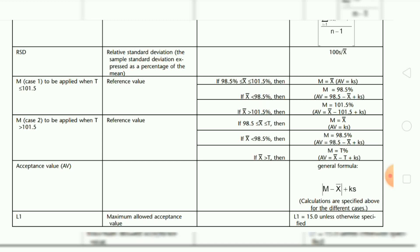Continuing Case 1: if x-bar is not greater than 98.5%, then AV is equal to 98.5 minus x-bar plus ks. If x-bar is greater than 101.5%, then m is equal to 101.5% and AV is equal to x-bar minus 101.5 plus ks.